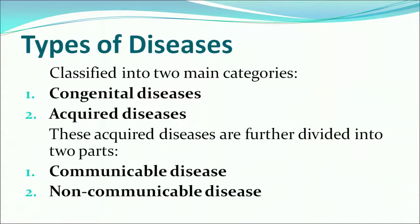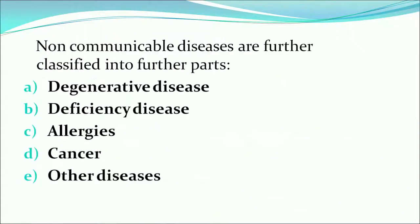Now we come on to the types of diseases. These are basically classified into two main categories. First is congenital disease and the second one is acquired disease. Acquired diseases are further divided into two parts: communicable disease and non-communicable diseases. Non-communicable diseases are further divided into degenerative disease, deficiency disease, allergies, cancer and other specific diseases.